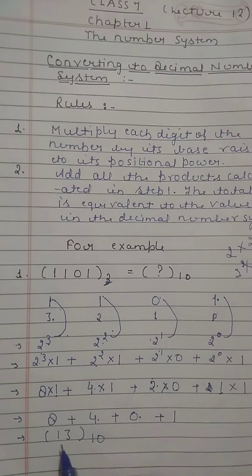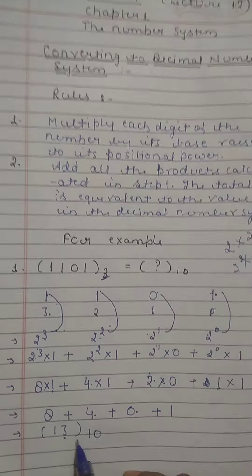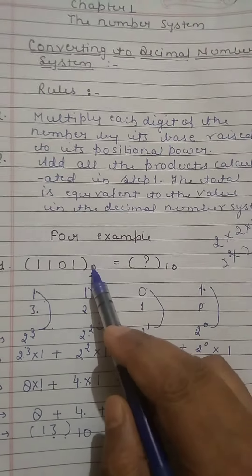So if we will add all the products, then we will get here 13, and this is the decimal equivalent of this binary number.